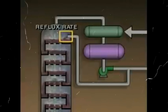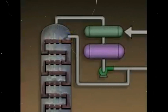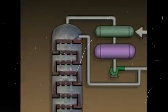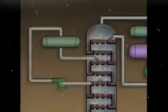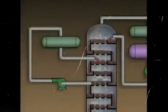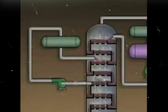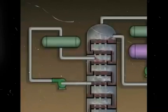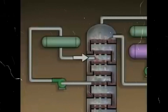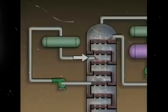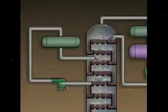Increasing the reflux rate decreases the temperature at the top of the tower. Some distillation systems contain equipment known as pump-arounds. The purpose of a pump-around is to remove hot liquid from the tower and pump it through a cooler. The cooled liquid is then reintroduced at a higher level in the tower, helping to control the temperature of the internal reflux.